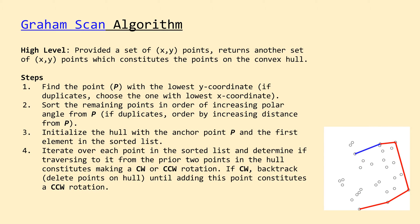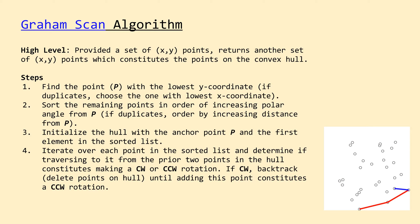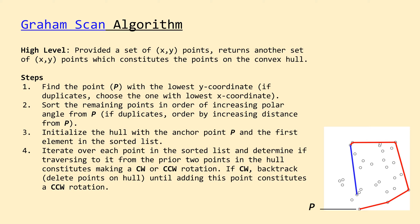On a higher level, we've already covered what happens inside the Graham Scan algorithm — we take in a set of points and return a subset of those points constituting the convex hull. On a lower level, we can break down the execution into four distinct phases. In the first step, we locate the point in the input set with the lowest Y coordinate. If there are multiple points sharing the same lowest Y coordinate, we choose the one with the lowest X coordinate. We'll call this point P, or in our code, anchor, because I think it more accurately describes what's going on.